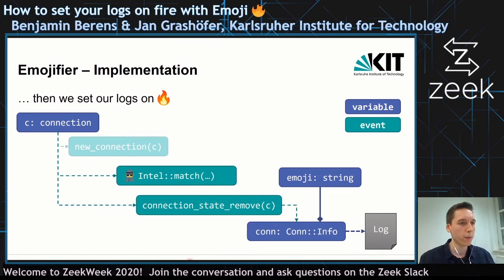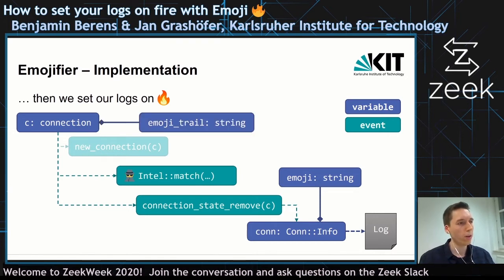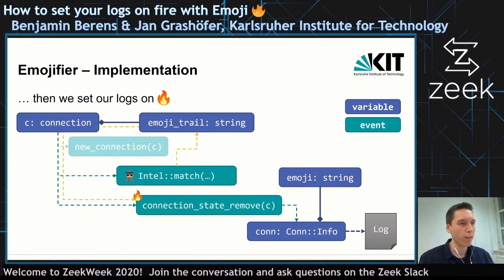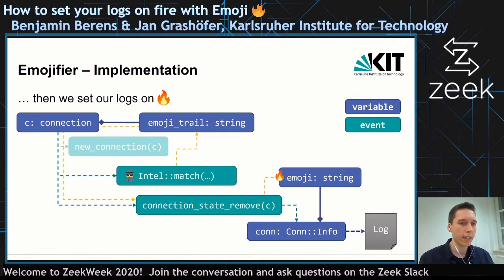We handled the intelligence match event that appends the fire emoji to the emoji trail, and that finally flows into the connection state remove event, and from there into the emoji string that will finally get into the log.